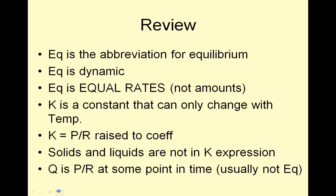Review: Equilibrium is dynamic. EQ means equal rates, not equal amounts. K is a constant that can only change with temperature. K equals products over reactants, each raised to their coefficients. Solids and liquids are not in the K expression. Q is products over reactants at any given moment. And that is it — hope you all go see a movie for good old Roger Ebert. Toodle.